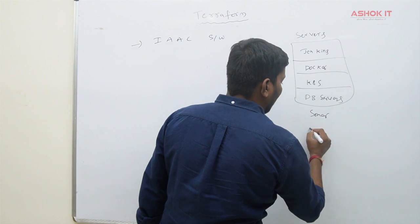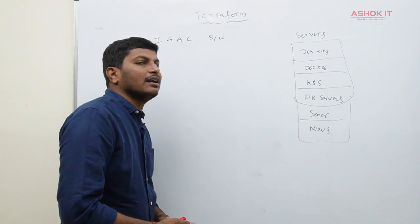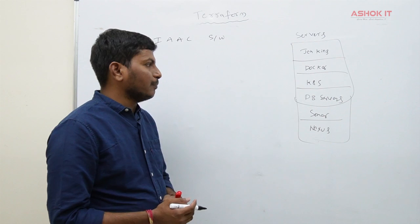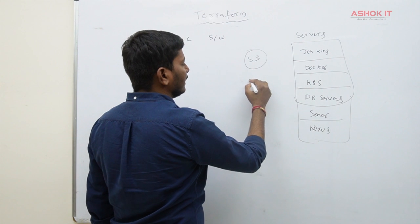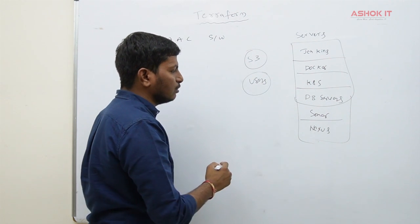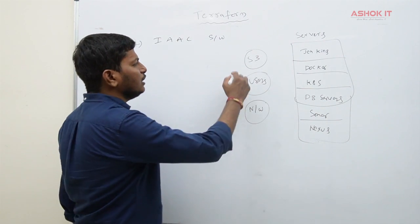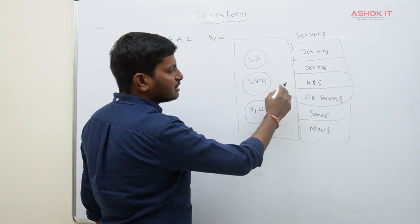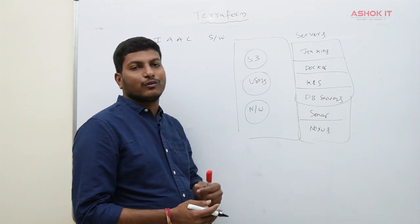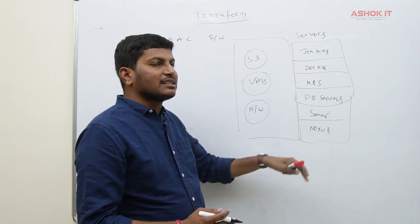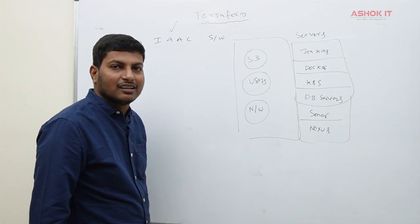We need a SonarQube server, a Nexus server. To install all these servers we need to create several machines in our cloud platform. Along with this, we need storage, users to manage our infrastructure, and a network in the cloud. Instead of creating all this infrastructure manually, we can use Terraform to create it.